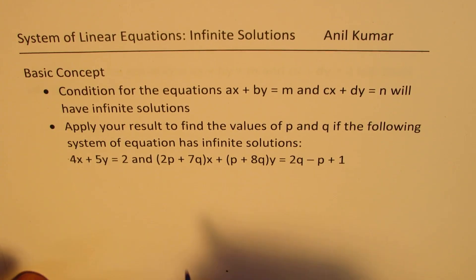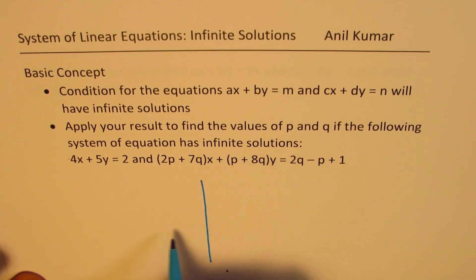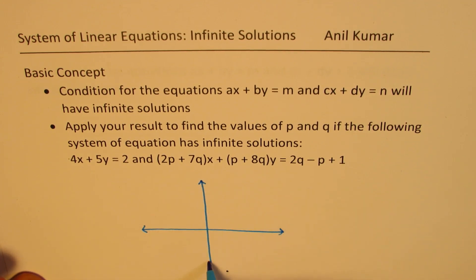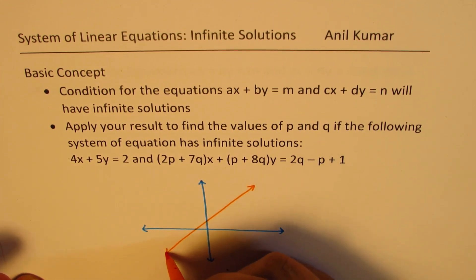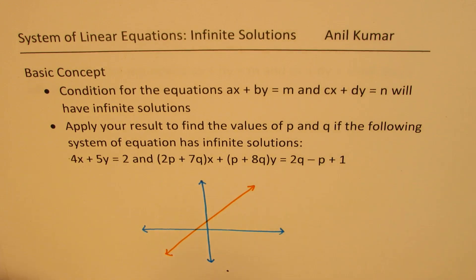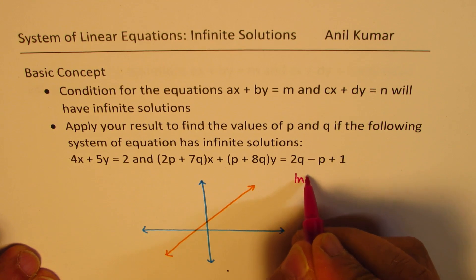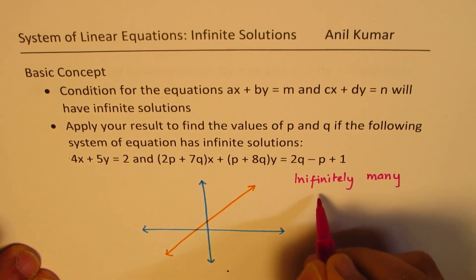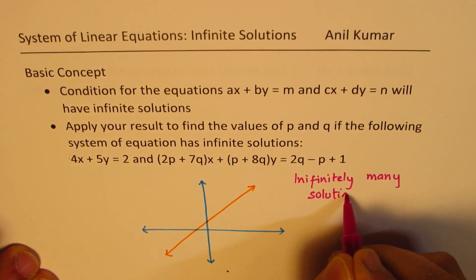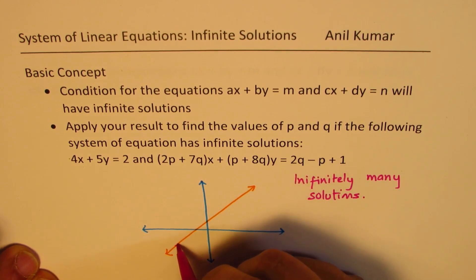As far as the basic concepts are concerned, let's say we have a coordinate plane with a linear system having infinitely many solutions. It basically means that the lines will be overlapping. If this is one of our lines representing one of the equations, then infinitely many solutions means that the other line should be overlapping.